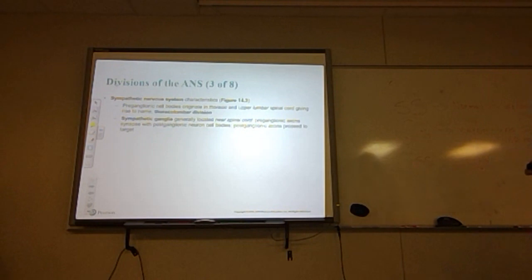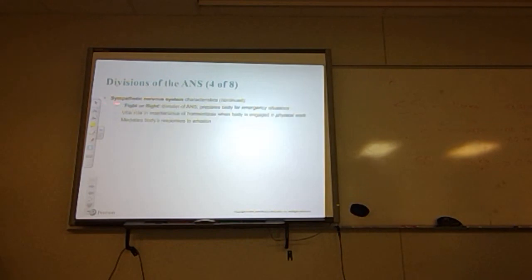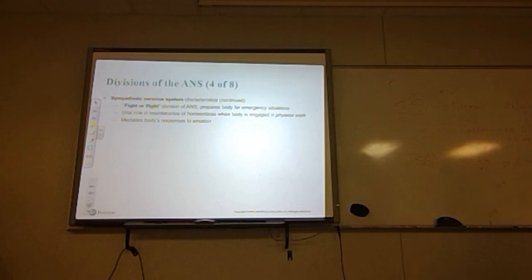Sympathetic ganglia are generally located near the spinal cord, where the pre-ganglionic synapse with the post-ganglionic neuron cell bodies. The post-ganglionic axons then proceed to the target. The sympathetic nervous system is our fight-or-flight system of the autonomic nervous system — this is the system that prepares us for emergency situations and plays a vital role in maintenance of homeostasis.